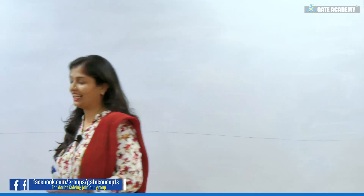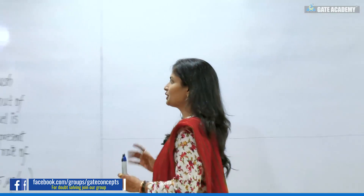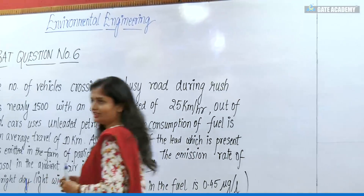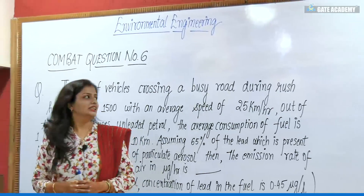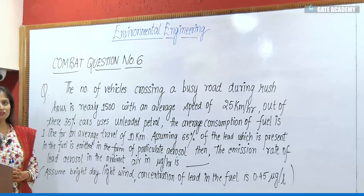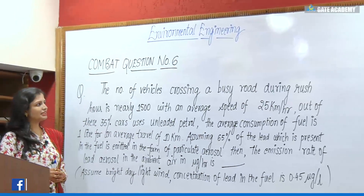Hello everyone, welcome to Gate Academy. Today we'll be dealing with the combat question — question number six for environmental engineering. I have written this question for you. I'll read it once. The question is: the number of vehicles crossing a busy road during rush hour is nearly 1500, with an average speed of 25 kilometers per hour.